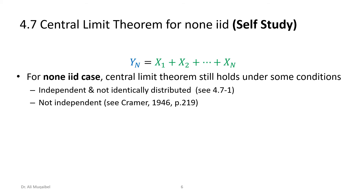The last section covers the CLT for non-IID variables. The CLT still holds under some conditions for the case of independent but not identically distributed variables, and also for dependent variables. This was studied by Cramér in 1946, but these cases are beyond the current scope. The key takeaway is that the CLT is a very strong theorem: it applies for IID variables, and in many cases with dependence it still holds true. Please write any questions or comments in the comment section — thank you for listening, and see you in coming videos.